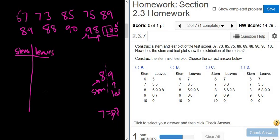You write down your stems, smallest to largest. So the smallest stem is 6. The next one is 7, the next one is 8, the next one is 9, and the next one is 10. So those are our stems. Now you write down the leaves, smallest to largest.